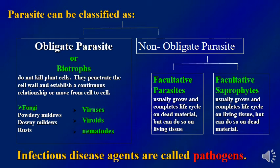Obligate parasites, also known as biotrophs, are a type of pathogen that does not kill plants. They penetrate the cell wall and establish a continuous relationship, moving from cell to cell without damaging the host plant cell. Examples include fungi, viruses, viroids, and nematodes — though not all fungi; some can live only on their host as biotrophs, such as powdery mildew, downy mildew, and rusts.